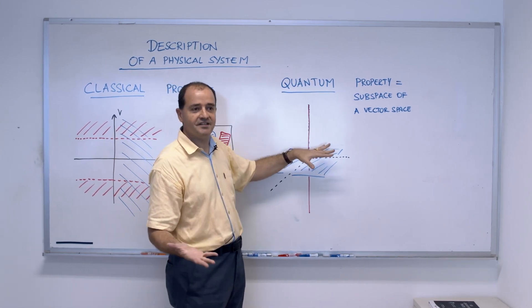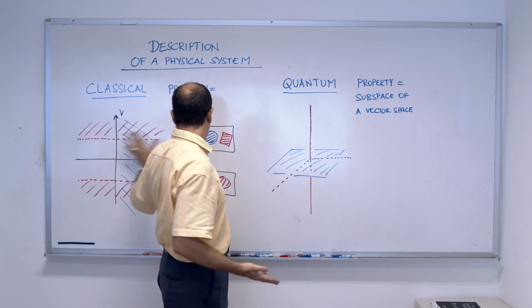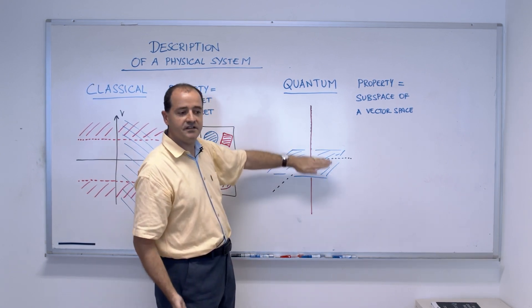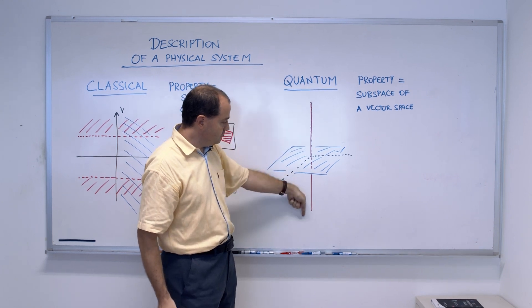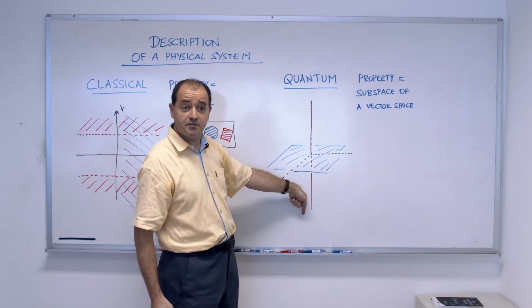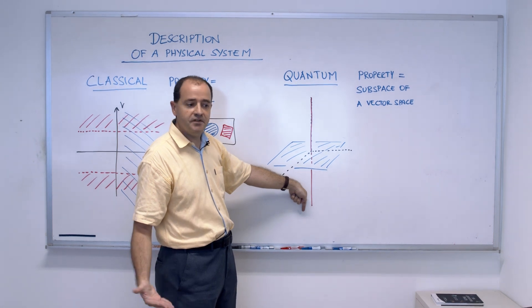You can think, it's not exactly like that, but you can think that this blue is the same as here, so these would be the cars that are east of the line. And this property is another, sorry, this subspace is another property, something else.